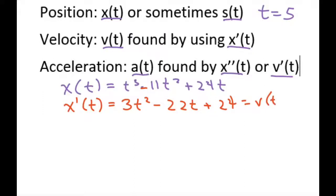Now to plug in to find the actual velocity at time 5, t equals 5, we just plug in the 5. So we're going to get, and that's going to equal negative 11 at t equals 5. Notice that this is negative.